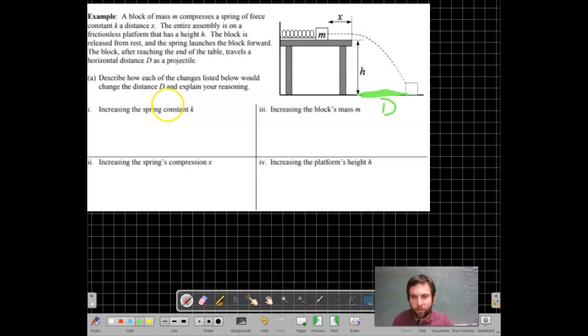If we increase the spring constant k, we increase that. That means a larger k means more energy is stored. More spring potential energy is stored within the spring, so guess what that means? That means there's more energy in the system, so the block gets more kinetic energy by the time it reaches the edge of the table.